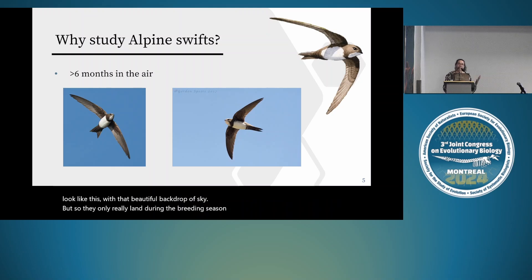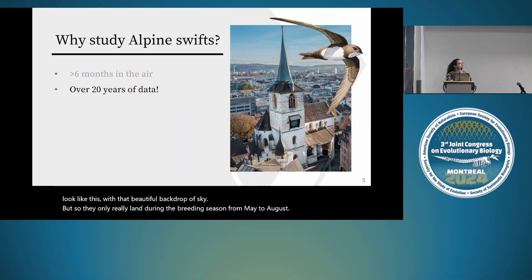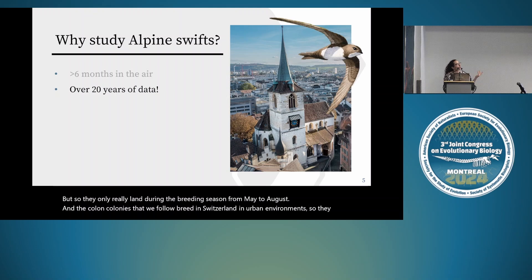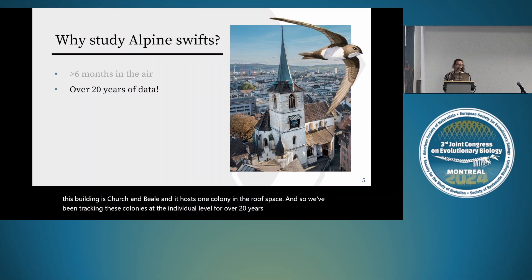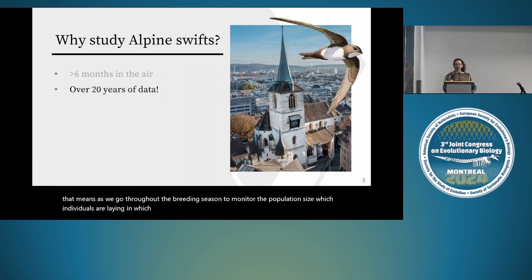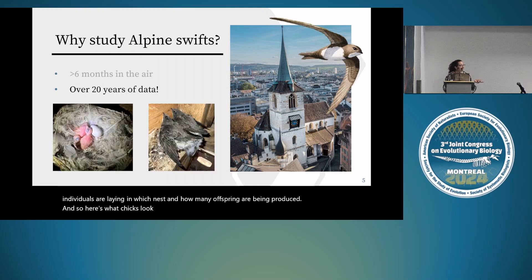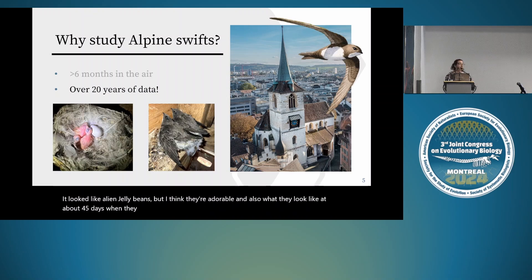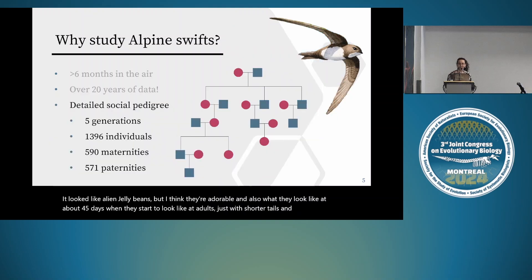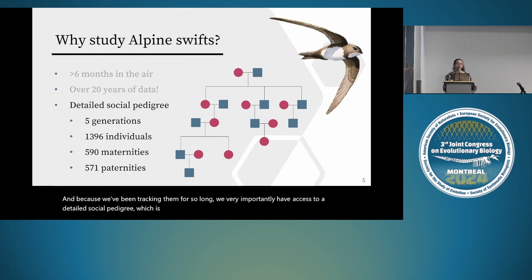They only land during the breeding season from May to August. The colonies we follow breed in Switzerland in urban environments—this building is Church and Beale, hosting one colony in the roof space. We've been tracking these colonies at the individual level for over 20 years, monitoring population size, which individuals are laying in which nests, and how many offspring are being produced. We have access to a detailed social pedigree, essential for quantitative genetics—five generations deep and including data on over 1,000 individuals.